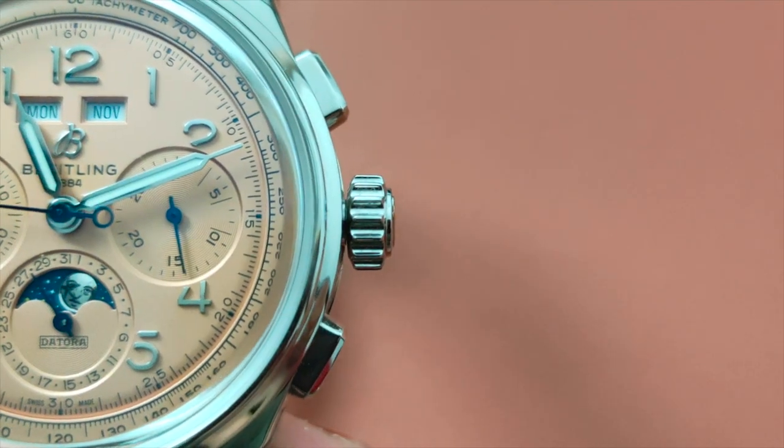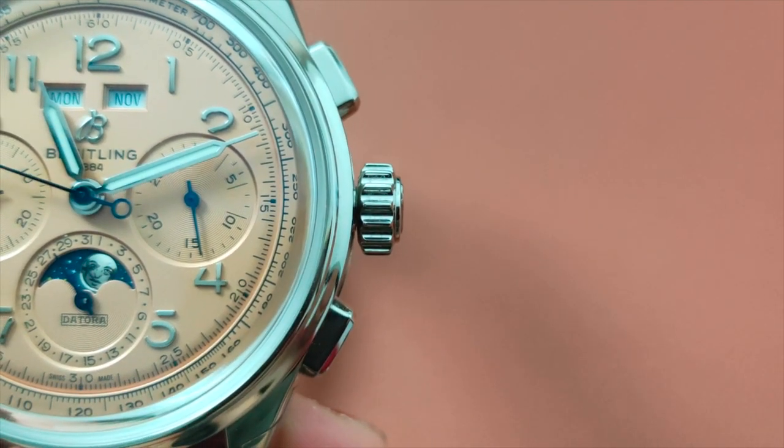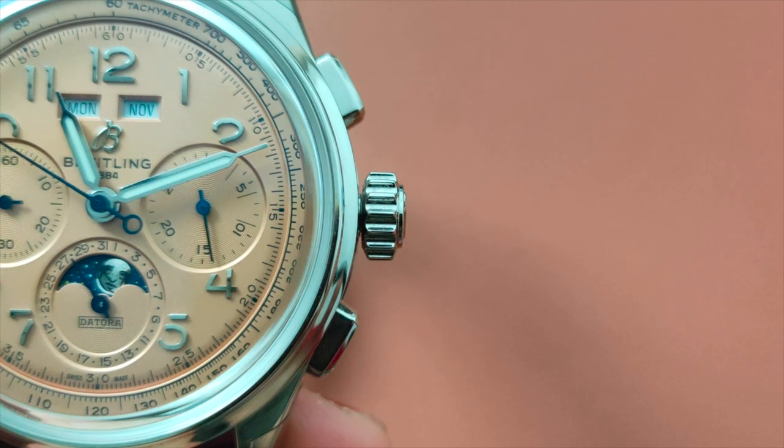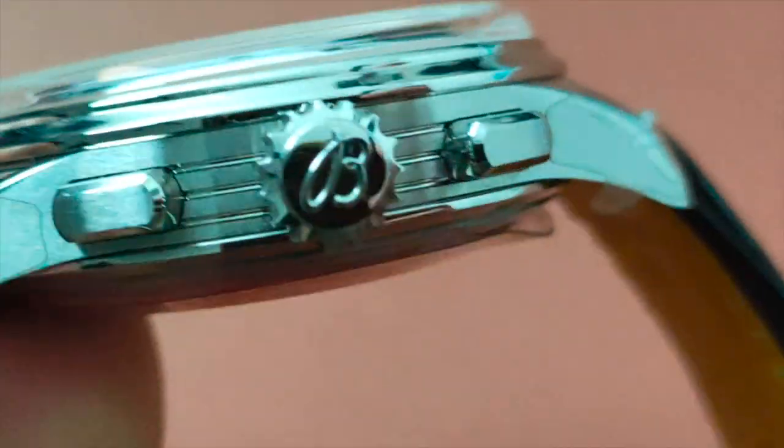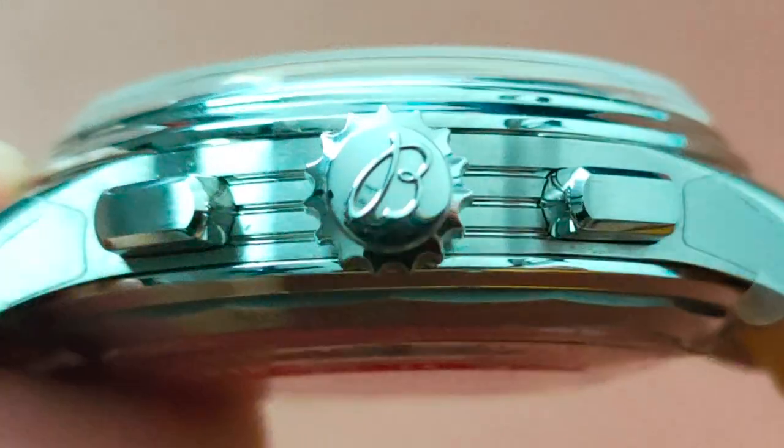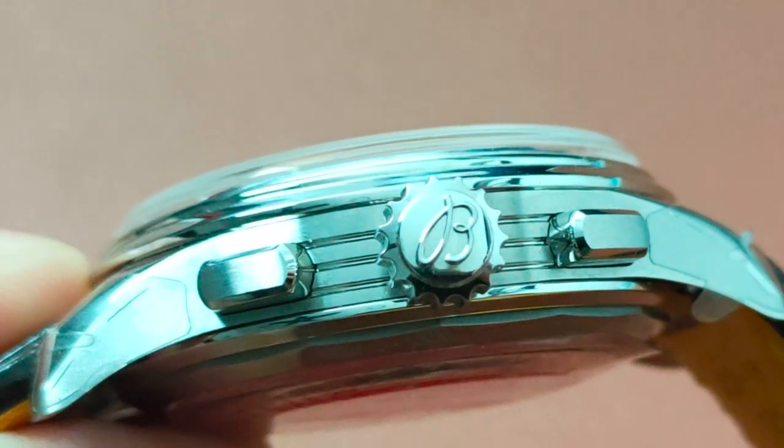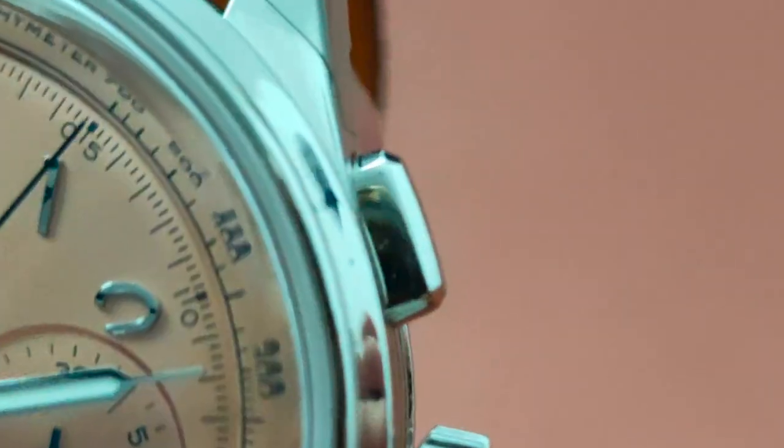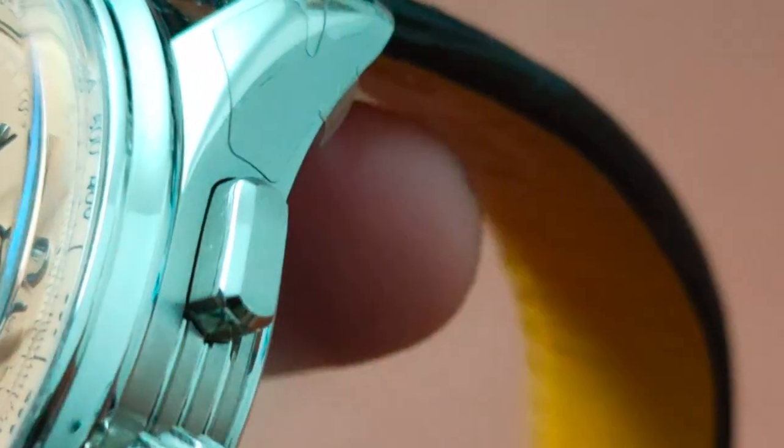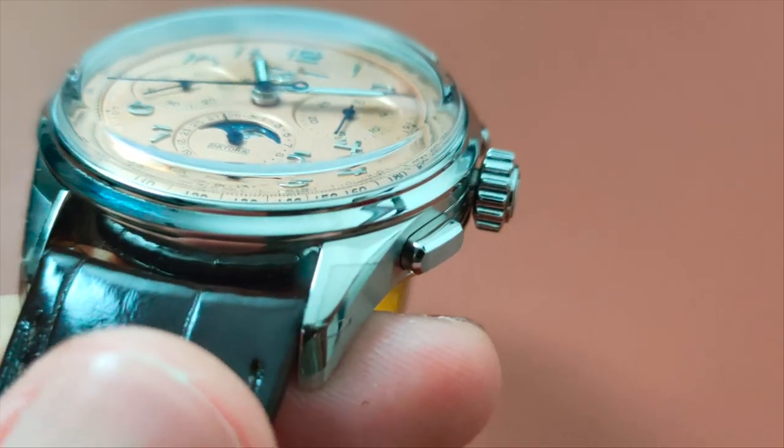The watch features a huge crown here that is not screwed down. However, it does have a 100m of water resistance. It is also signed with the B logo on it. It also features the rectangular chronograph pushes that are polished, making it look very sleek. The very thin bezel is also polished.